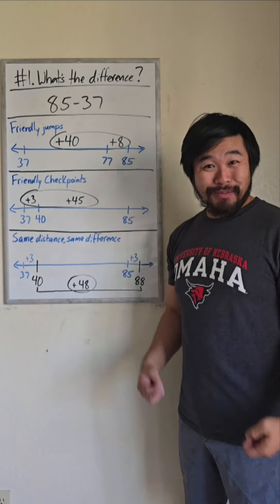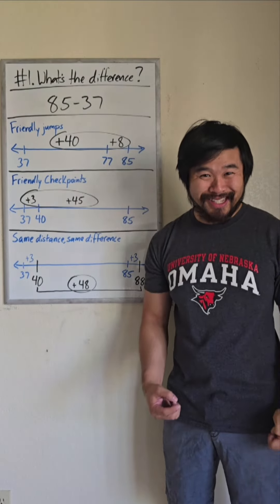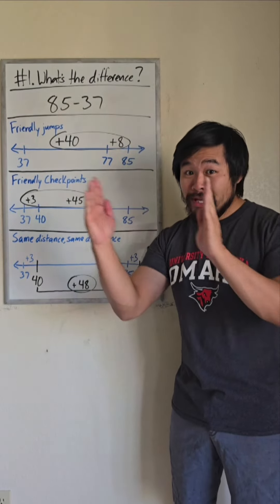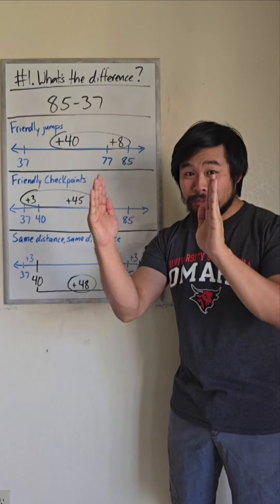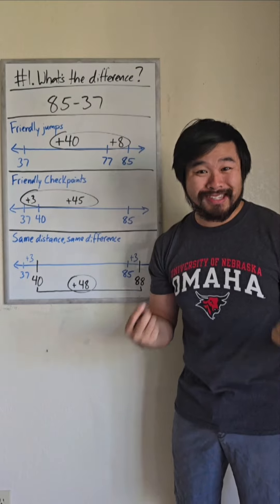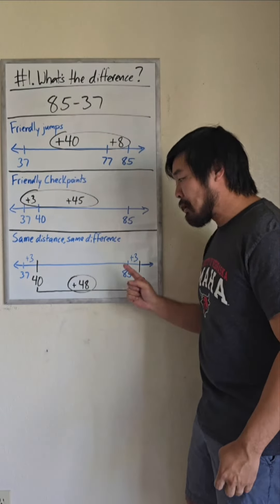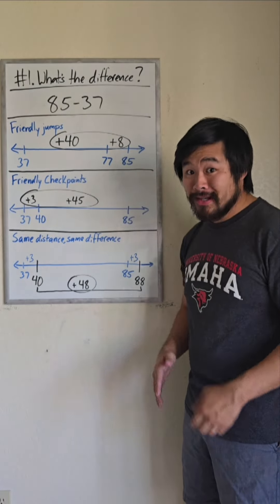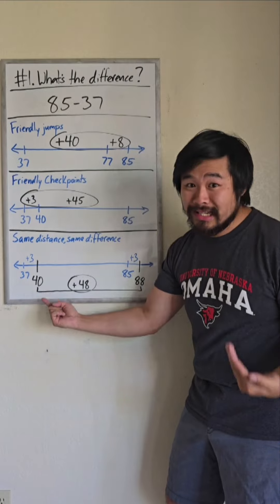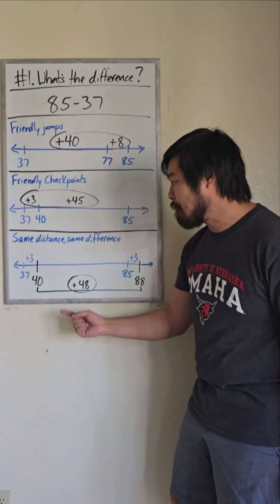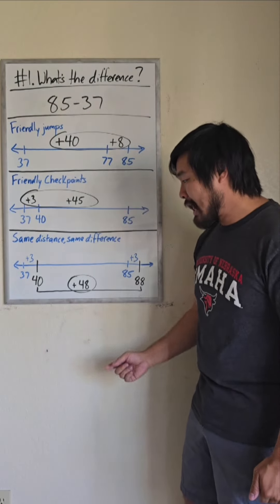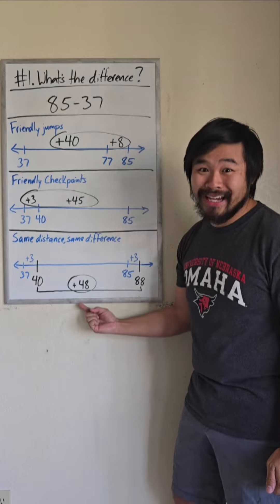Another method is called same distance, same difference, or constant difference. If we add or subtract the same amount to both numbers, the difference is the same. So if I add 3 to both of these numbers, the difference between 88 and 40 is much easier for me to compute than the difference between 85 and 37. I can see that the difference is 48.